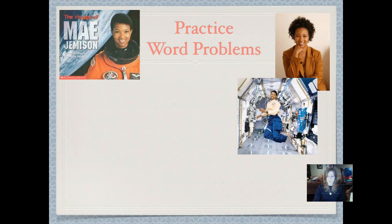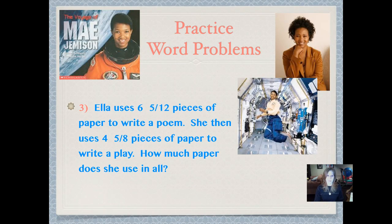It's time to practice word problems. Here it is. That was orbital, wasn't it? Ella uses 6 and 5 twelfths pieces of paper to write a poem. She then uses 4 and 5 eighths pieces of paper to write a play. How much paper does she use in all? Look for those key words to tell you what operation to use. Use the steps to go through and solve your problem correctly. Pause it and push play when you're ready.